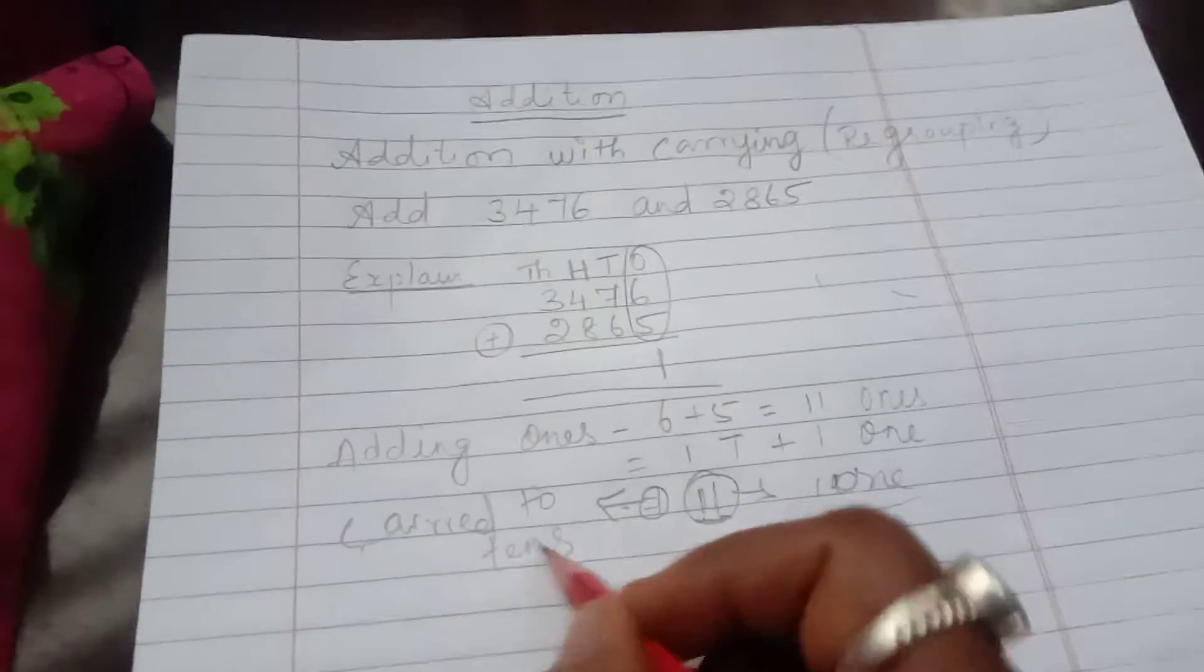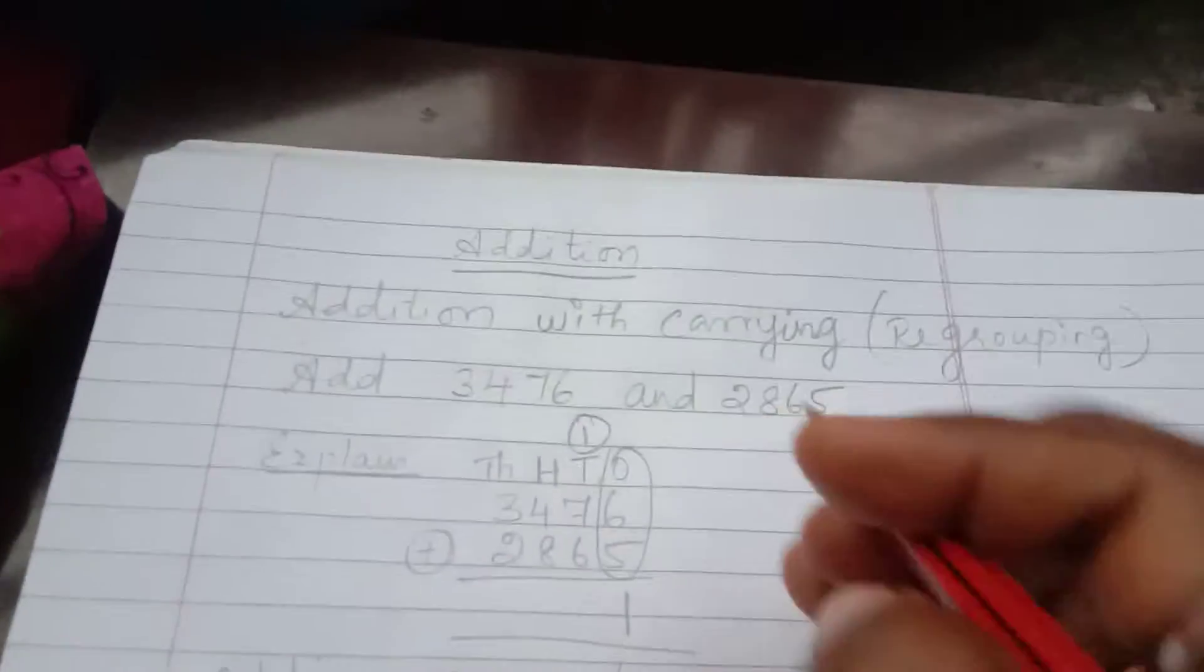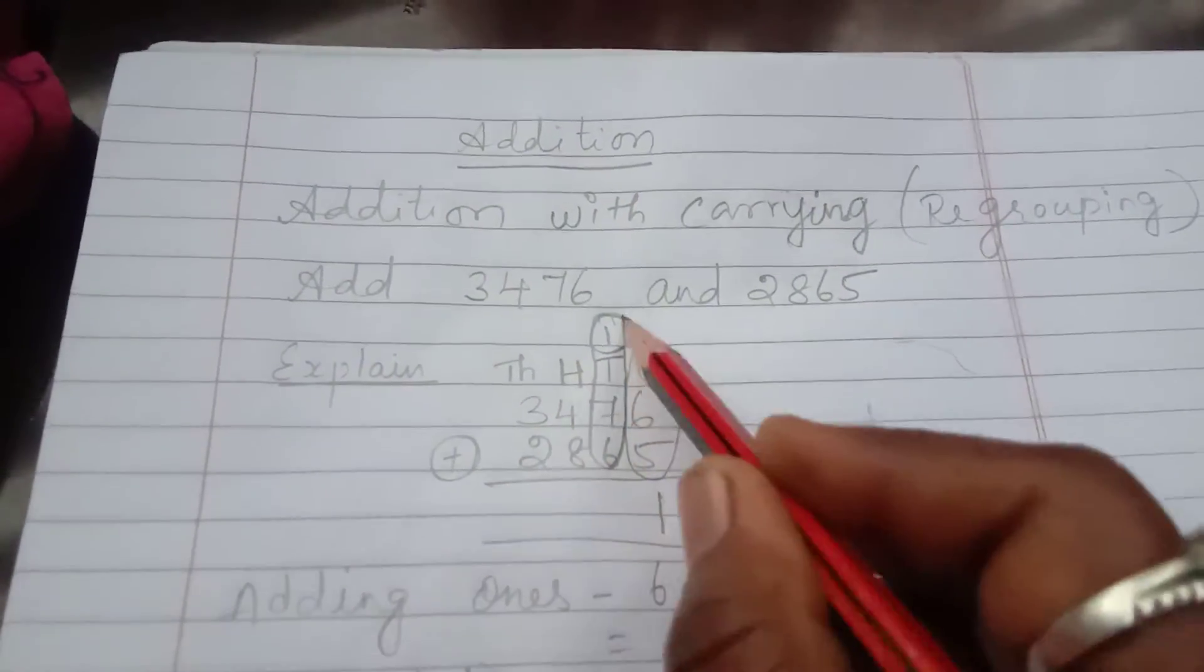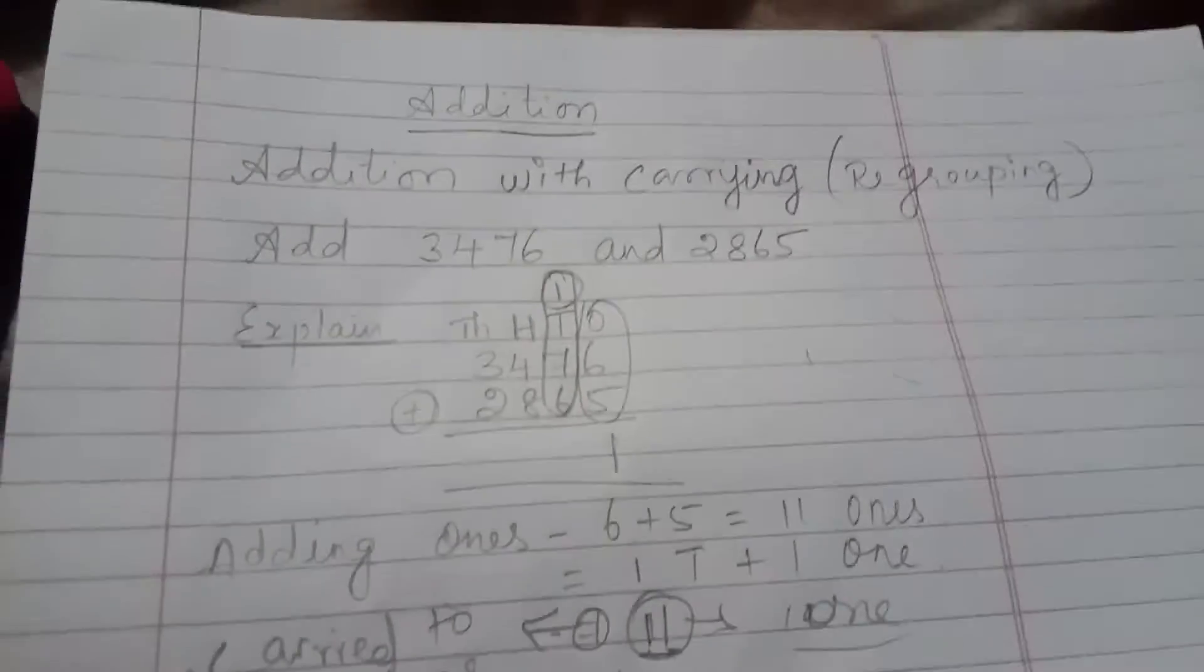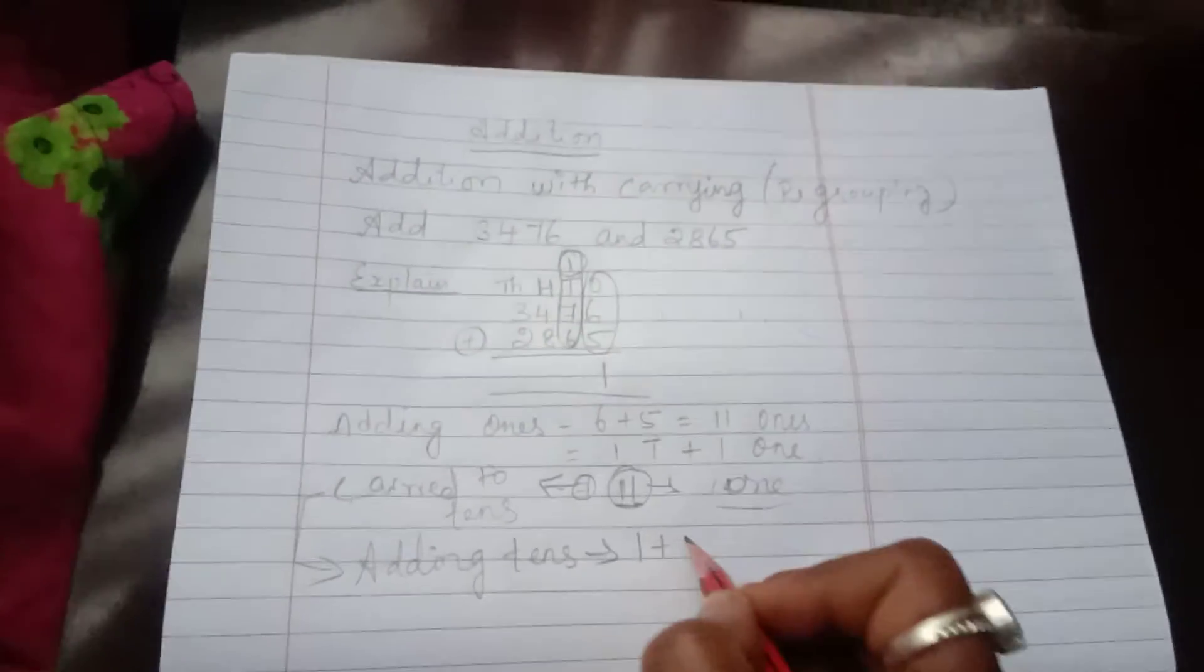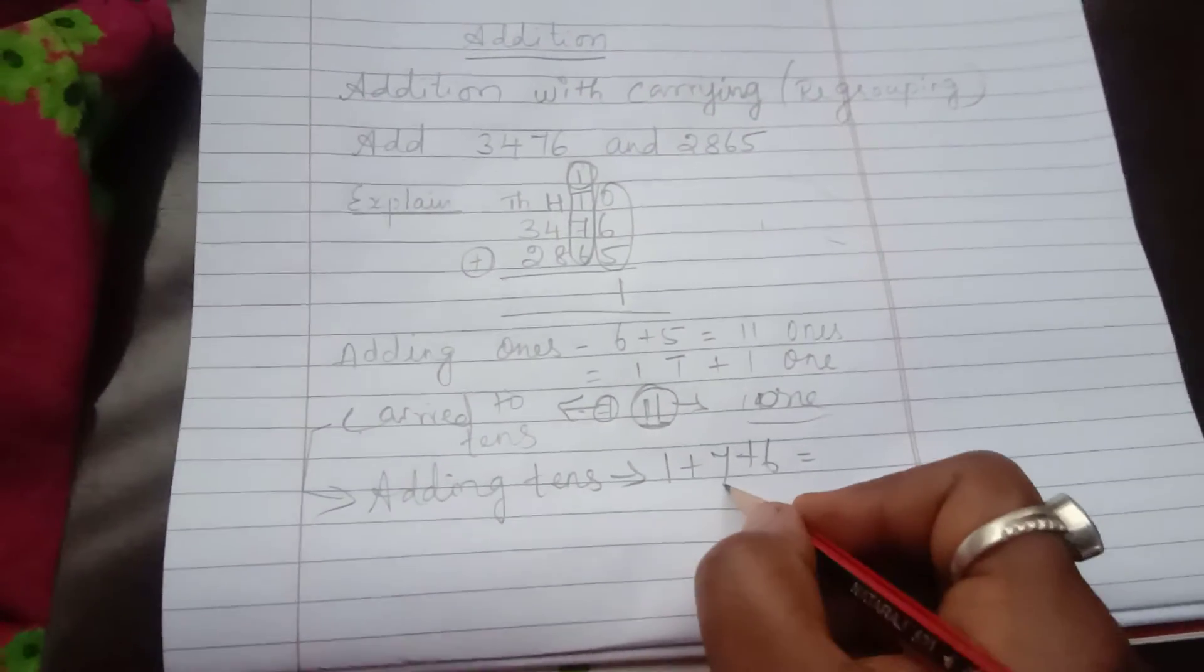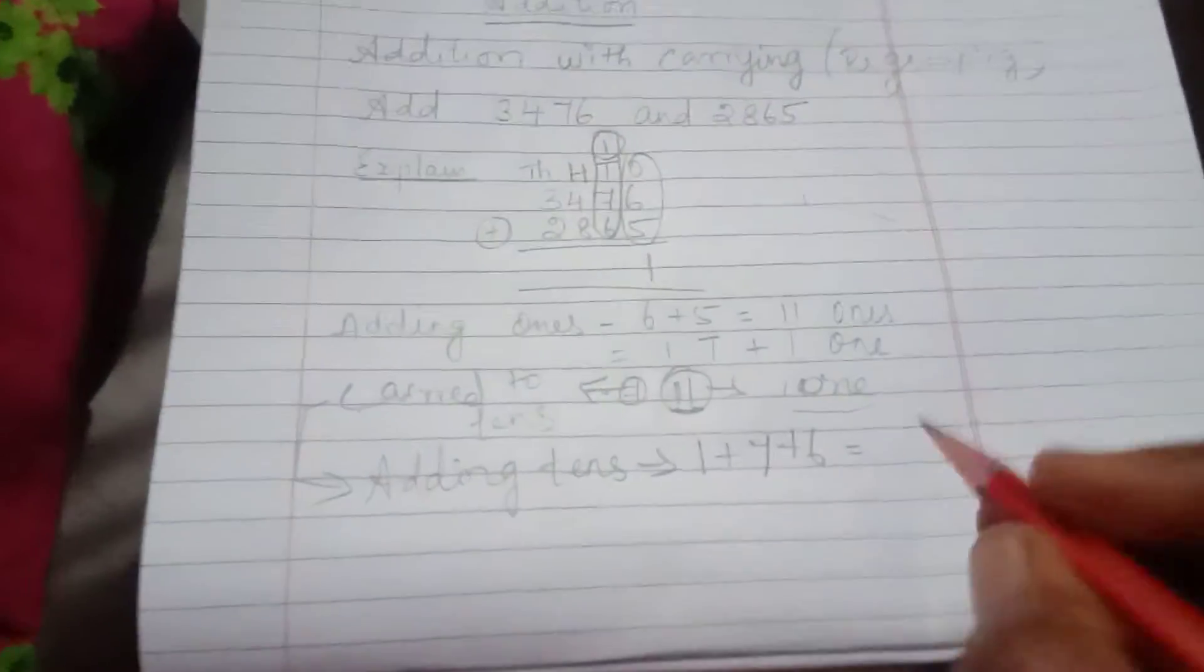So in this ones I am going to write it here. So now we are going to add this tens place. In tens place, how many numbers are there? Adding tens. 1 plus 7 plus 6, so 7 plus 6 is 13. So 1 plus 1 is 14.